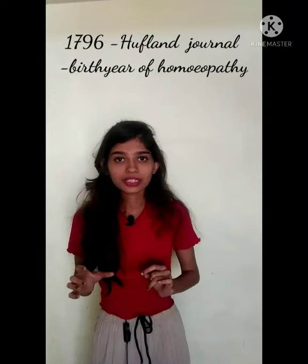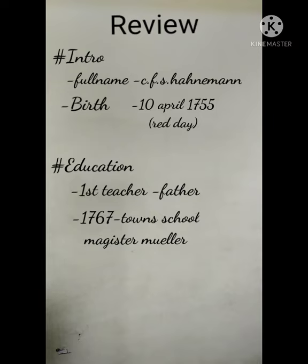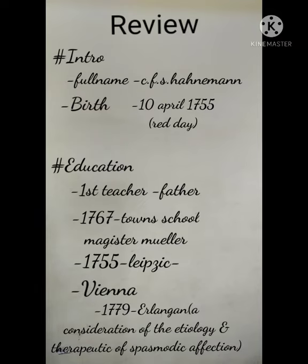His date — 1796 is the birth year of homeopathy. The full name is Christian Friedrich Samuel Hahnemann, born 10 April 1755, celebrated as a Red Day. The education: the first teacher and the father's town school was in 1767, the magistrate Muller. He went to Leipzig. A consideration of the etiology and therapeutics of spasmodic affections.